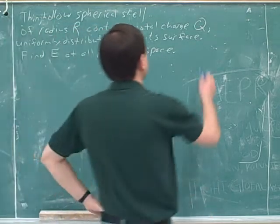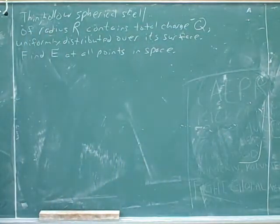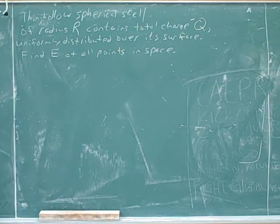Maybe we'll make this a little more interesting and say that here the charge is negative Q. On the last problem, we were assuming the charge was positive Q, so now we can say that it's negative and we want to find the electric field at all points in space.